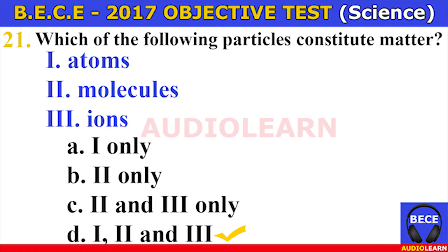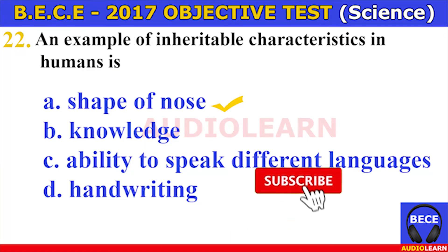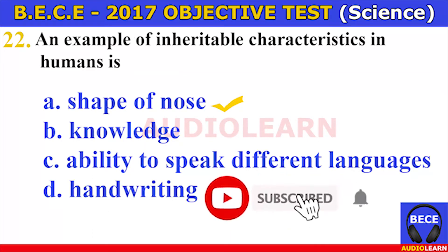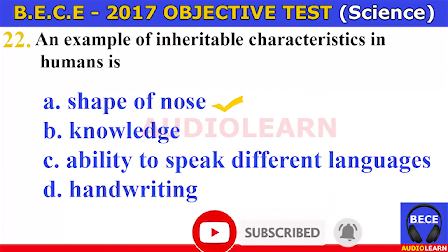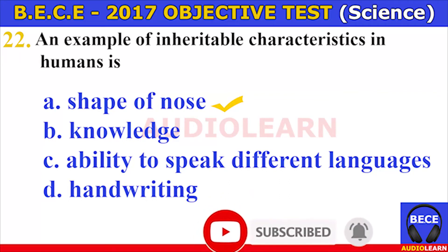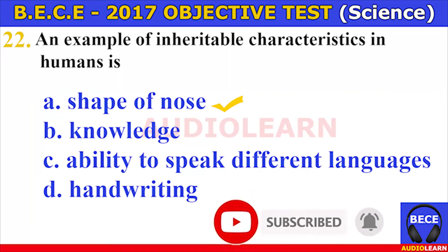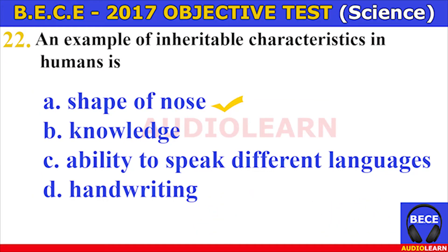Number twenty-one. Which of the following particles constitute matter? I. Atoms, II. Molecules, III. Ions. The answer is D — all of I, II, and III. Which of the following particles constitute matter? The answer is atoms, molecules, and ions.